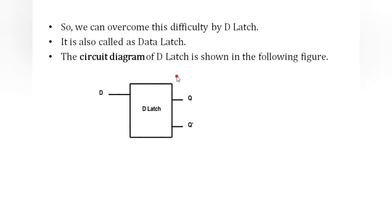D latch has only one input. In SR latch we have two inputs — one is set, second one is reset. In D latch, only one input is taken. This is the block diagram of D latch.